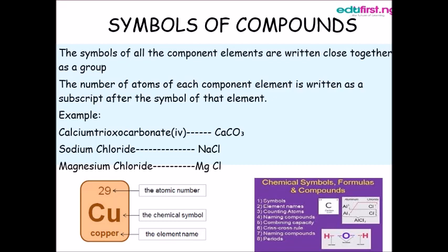The number of atoms of each component element is written as a subscript after the symbol of that element. For example, we have water H2O. In water we have two atoms of hydrogen and one atom of oxygen, that is why we have H subscript 2 and then O.